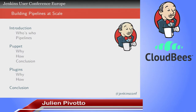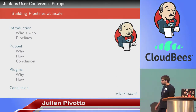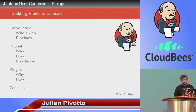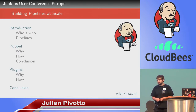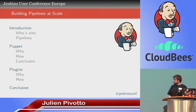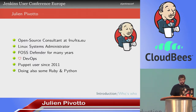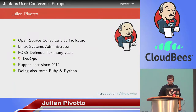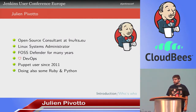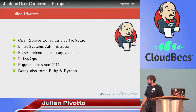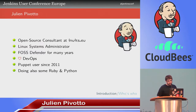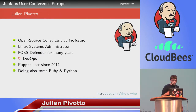Good afternoon, everybody. I will tell you how we build pipelines at scale, and I will take two approaches. First, I will show you the Puppet approach, which is more an infrastructure-centric approach, and then we will do the same with just plugins. I am Julien Pivotot, an open-source consultant at Inuits, a large open-source company in Belgium. I have loved open-source software for many years, I like DevOps, and I am a Puppet user since 2011 and a Jenkins user since the same year. I also do some Ruby and Python, because nowadays you cannot just do sysadmin — you also have to develop a bit.